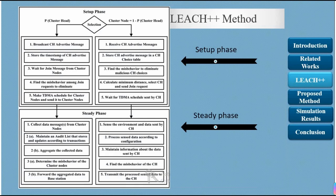The LEACH protocol works in rounds, each composed of two phases: setup phase and steady-state (SD) phase. In the setup phase, sensor nodes select a CH to create a hierarchy for sending data to the base station. CHs advertise a CH message so other nodes can join their clusters. A sensor node selects the CH with minimum distance to the base station and sends a join request.